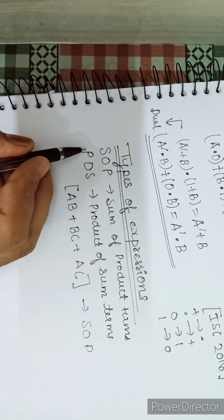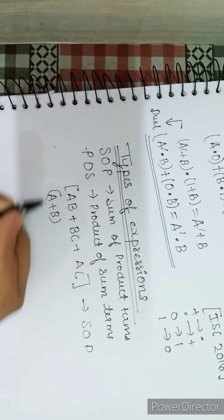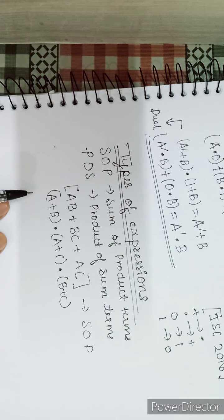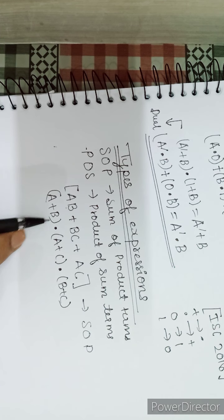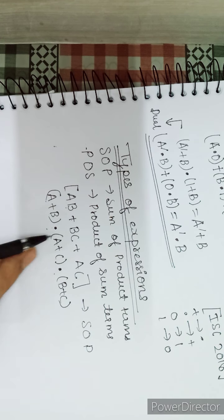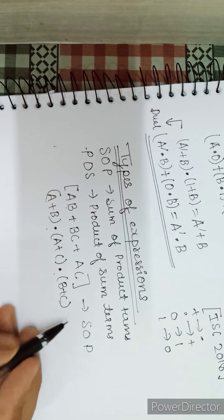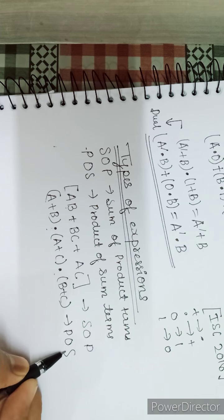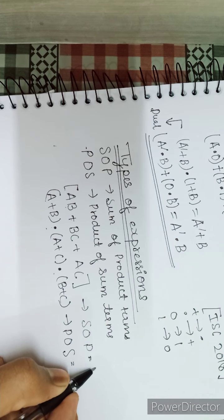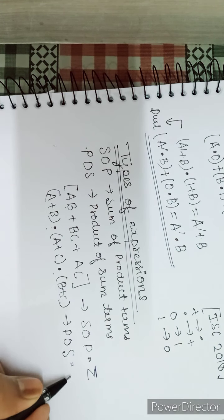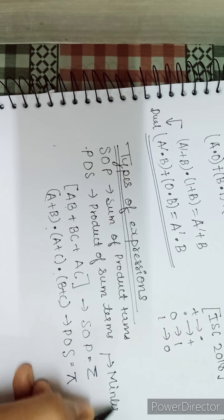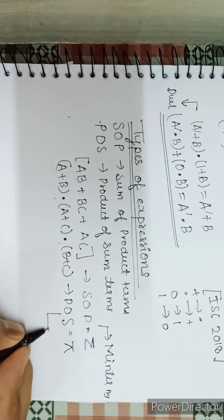An example of POS will be (A plus B) dot (A plus C) dot (B plus C). You can see that first we do addition then we multiply, so this is Product of Sum terms — first sum, then product, so this is POS form. We use sigma notation for SOP and pi for POS. For SOP, the terms are called min terms, and for POS, the terms are called max terms.